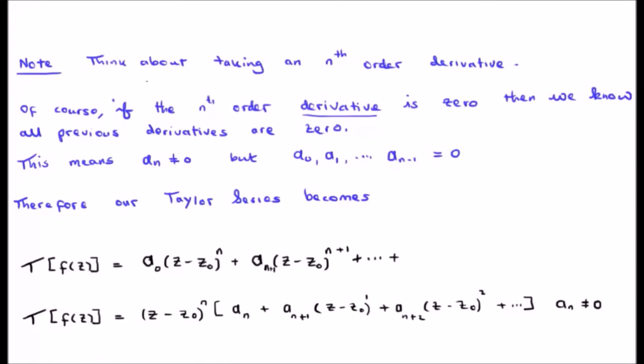Now I present something here which I don't want to get bogged down in. Think about taking the nth order derivative. Of course, if the nth order derivative is zero, then we know all previous derivatives are zero. This means that a sub n is non-zero but all the ones up to that are. Therefore our Taylor series will become what's written at the bottom of your screen. This is just a small piece of mathematics which we can accept and use later on.